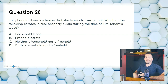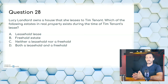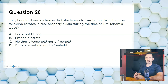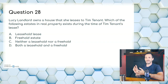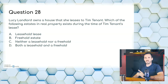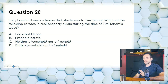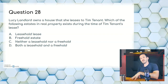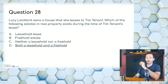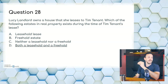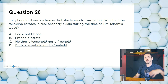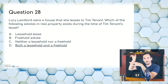Question twenty-eight: Lucy Landlord owns a house that she leases to Tim Tenant. Which of the following estates in real property exists during the time of Tim Tenant's lease? A, leasehold estate; B, freehold estate; C, neither; or D, both a leasehold and a freehold. The quick answer would be A, but it's also still being held as a freehold estate by the owner. Those two things work in conjunction together. The answer is D — both a leasehold and a freehold. If someone is renting a property, there's still somebody that owns that property.